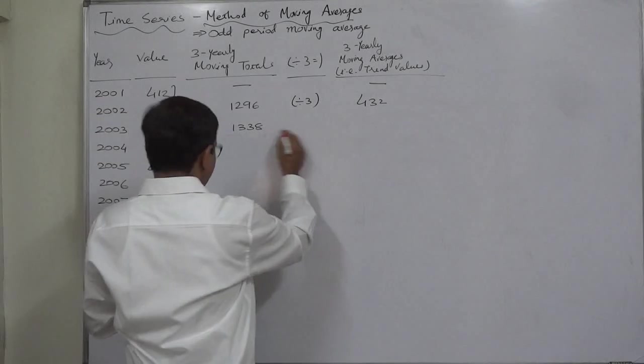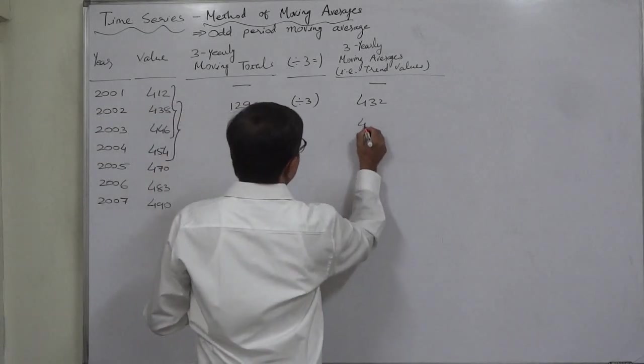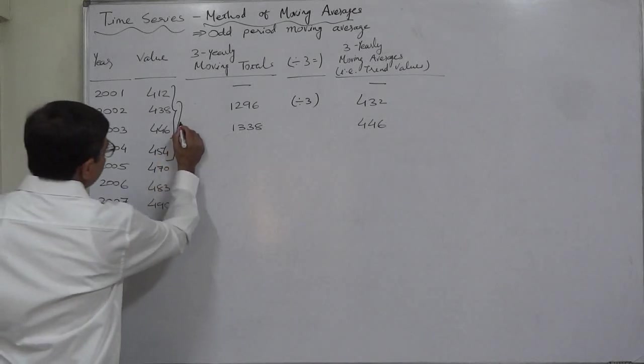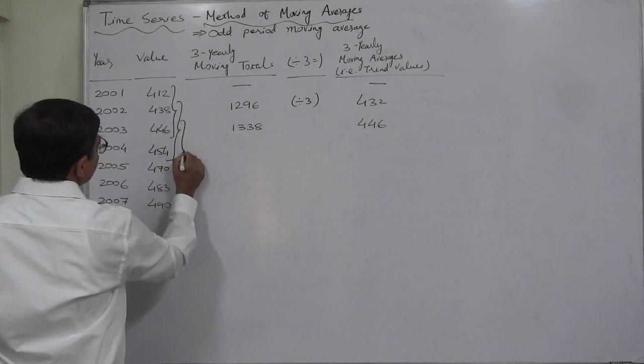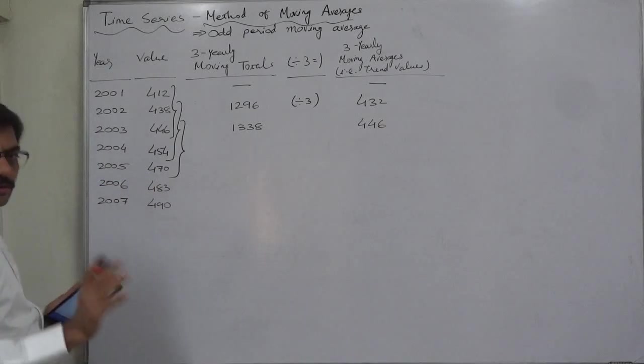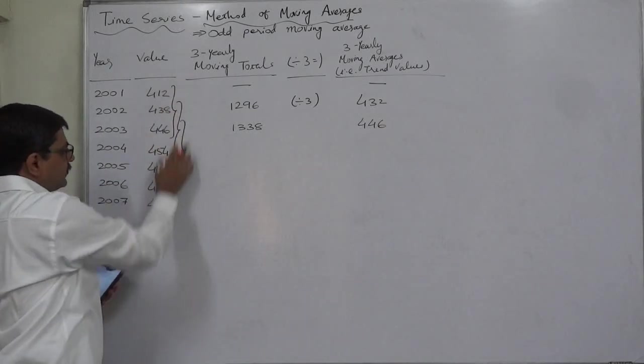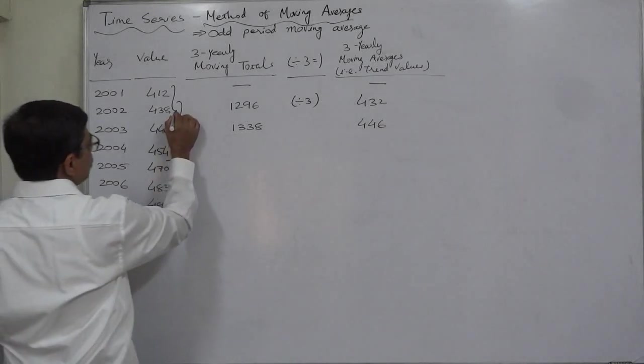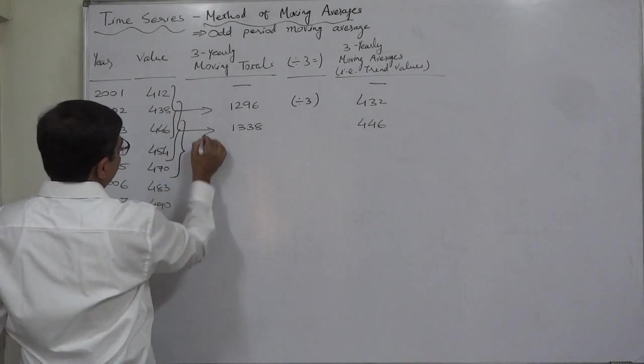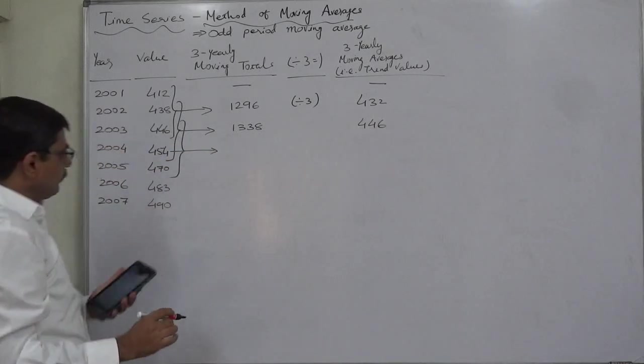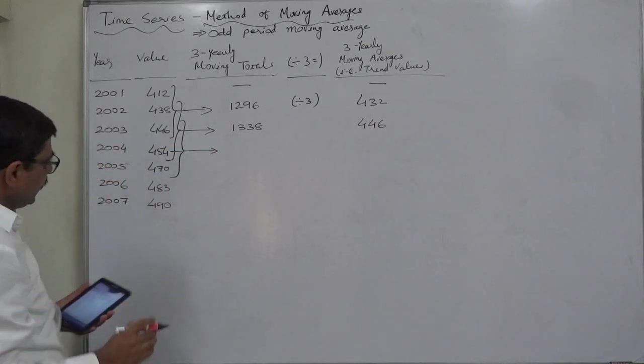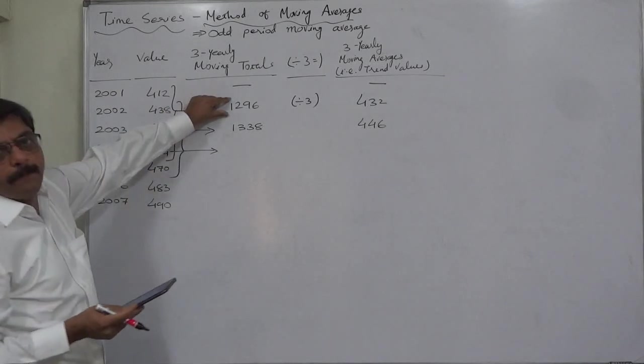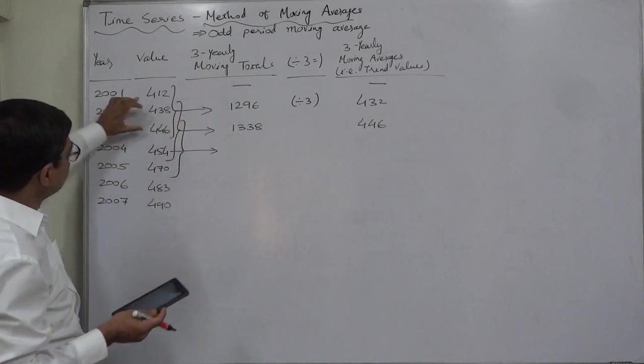1338. Again divide it by three and it will be 446. Now the next will be total of third, fourth, and fifth. You need not draw this type of brackets every time, but for the purpose of your better understanding I am doing this.